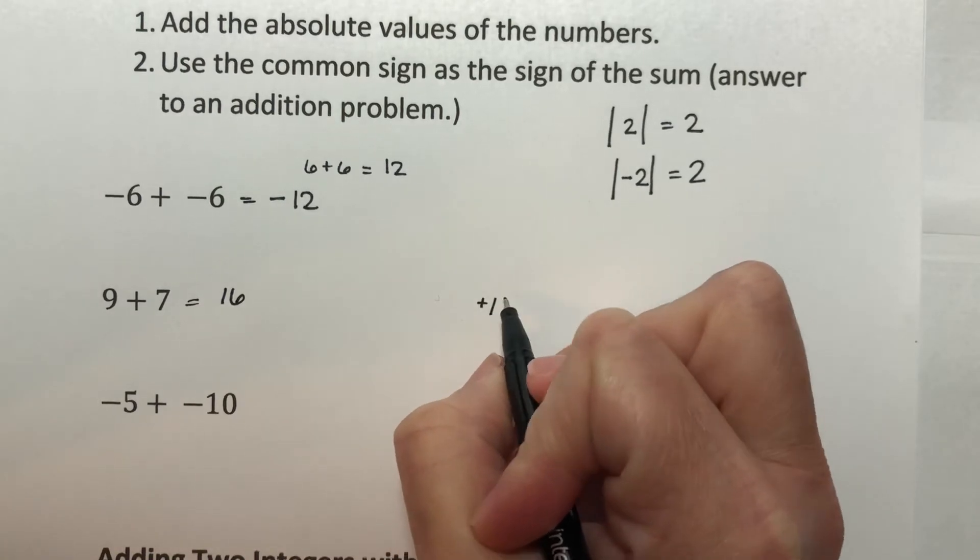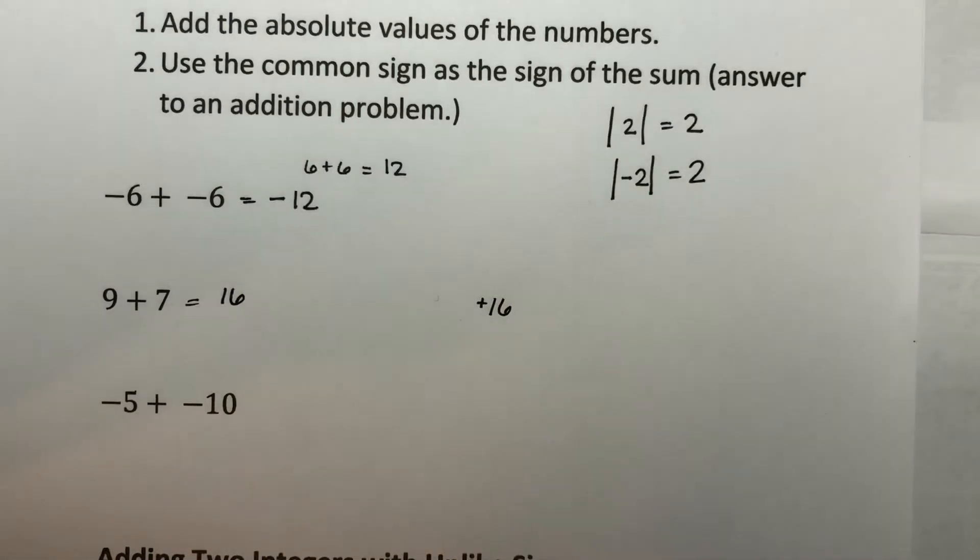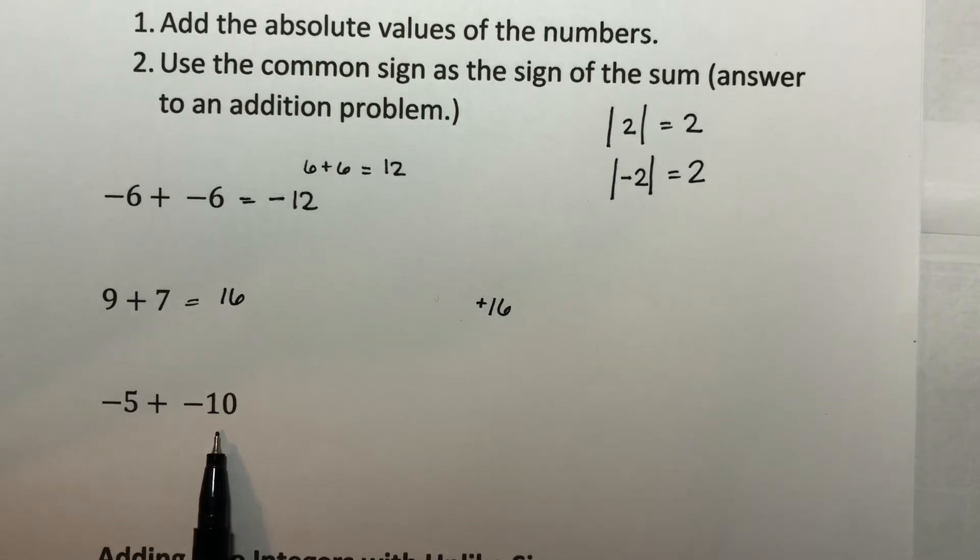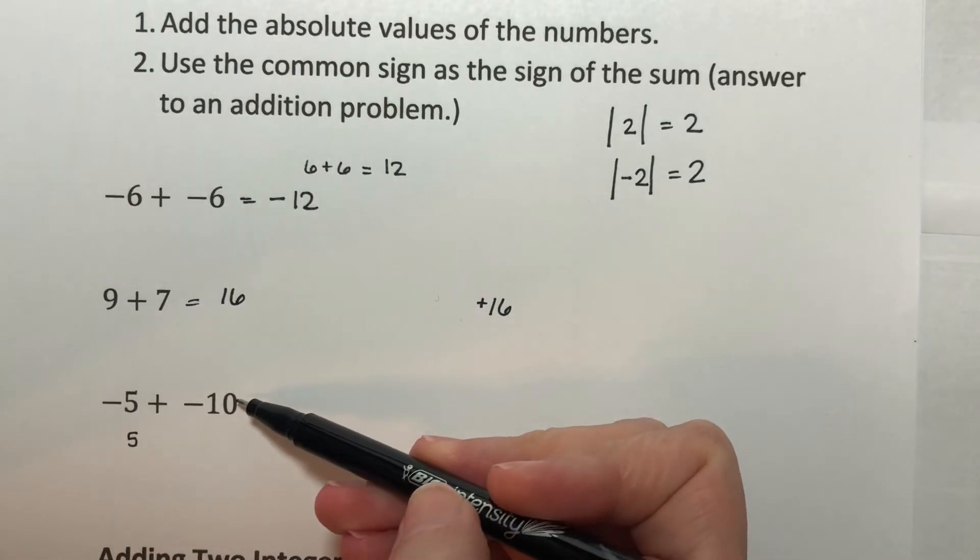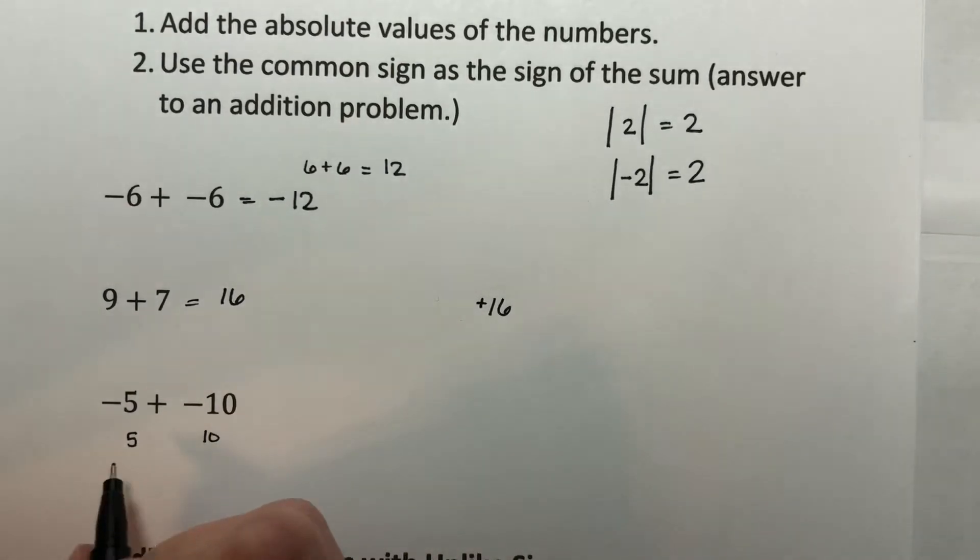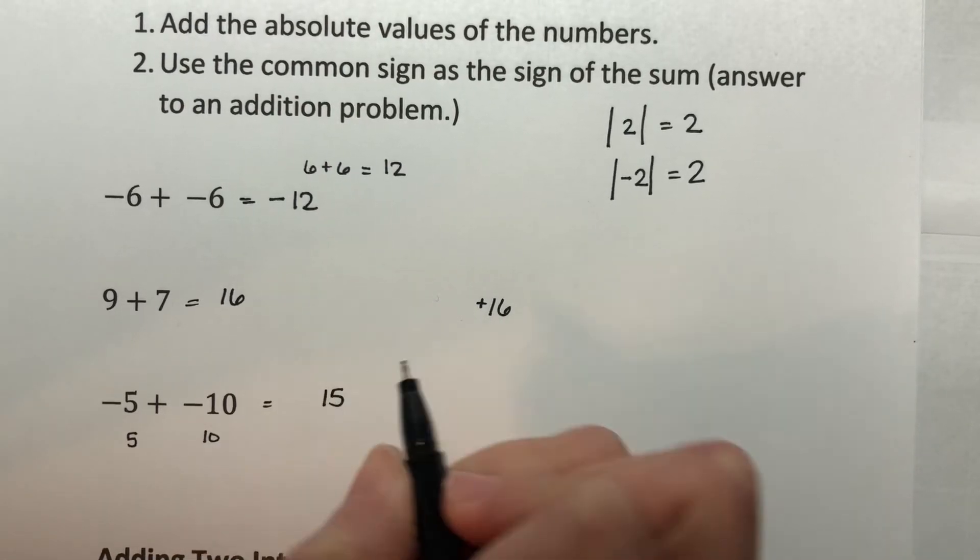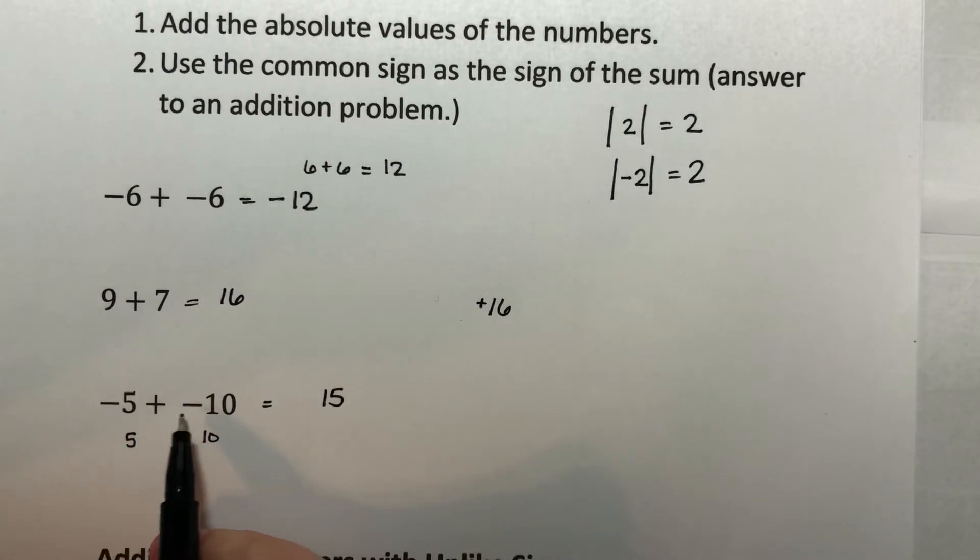Now we don't generally write our positive signs. Occasionally we will when we want to make something very obvious that it's positive or something like that. But if there's not a sign there, it's assumed to be a positive number. Negative five plus negative 10. The absolute value of negative five would be five. The absolute value of 10 is 10. Five plus 10 is 15. These are both negative numbers. So your answer is also negative.